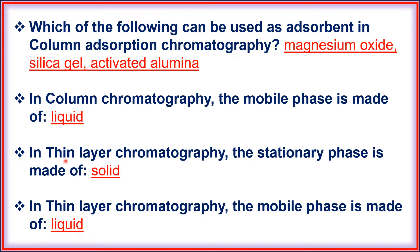In thin layer chromatography, the stationary phase is made up of solid. In thin layer chromatography, the mobile phase is made up of liquid.